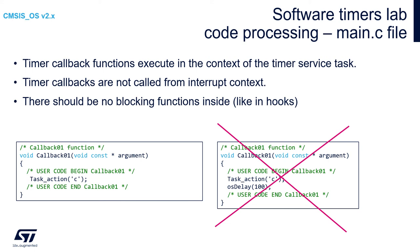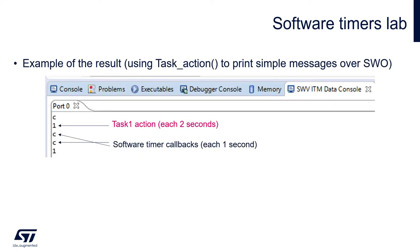So on each call to the timer service task we will see on our ITM single wire viewer monitor a 'c' character. After this code modification please compile the code, start a debug session, start the ITM SWV monitor, and run the application. After running the application we should see on our SWV ITM data console a similar picture to this one. At the beginning there is a timer service task run, so we can see the 'c' letter on the monitor. Then we can see task1 action and the character '1' is displayed. Each two seconds for task1 and each one second for the software timer we see the 'c' letter. The pattern looks like: c, then after one second '1', then after one second 'c', then after another second 'c', then after the next second '1'.